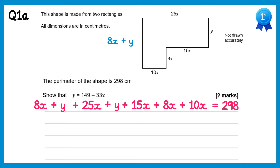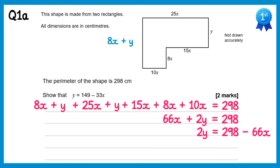If we now simplify, let's start by collecting the x terms. If you add all of these up you'll get 66x, and the two y terms give you 2y. So this must equal 298. If we subtract 66x from both sides we get 2y on the left and 298 minus 66x on the right. Then divide both sides by 2 and you'll get y equals 149 minus 33x, which is what we were asked to show.